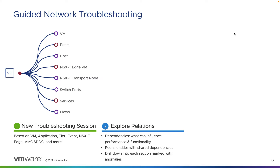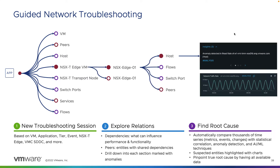Second, we provide a dependency graph that allows the operator to navigate the relationships between physical devices, overlay, underlay, flows, and applications. Finally, vRealize Network Insight uses AI and machine learning to statistically correlate metrics, events, and changes to highlight any branch or entity where an anomaly has been detected.